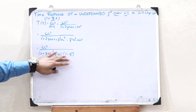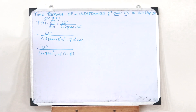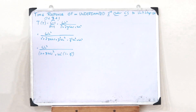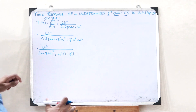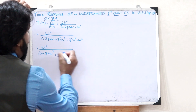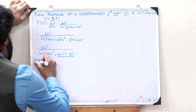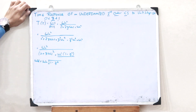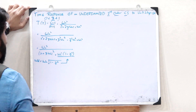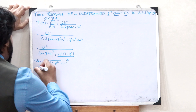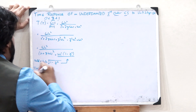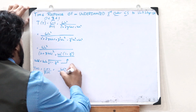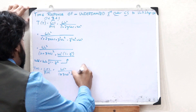In the case of an under-damped control system, ζ is between 0 and 1, so the term (1 − ζ²) is always positive and never negative. We therefore define ωd = ωn · √(1 − ζ²). Substituting this, the transfer function becomes T(s) = C(s)/R(s) = ωn² / [(s + ζωn)² + ωd²].